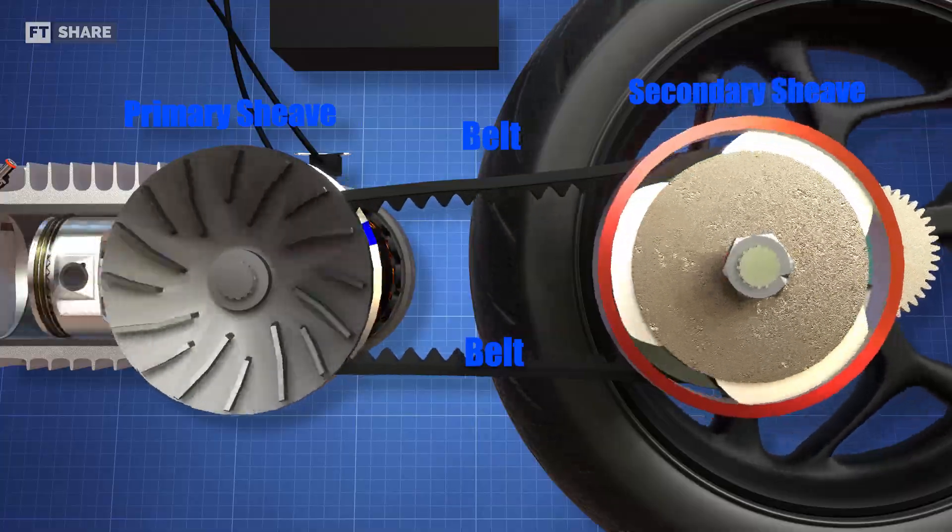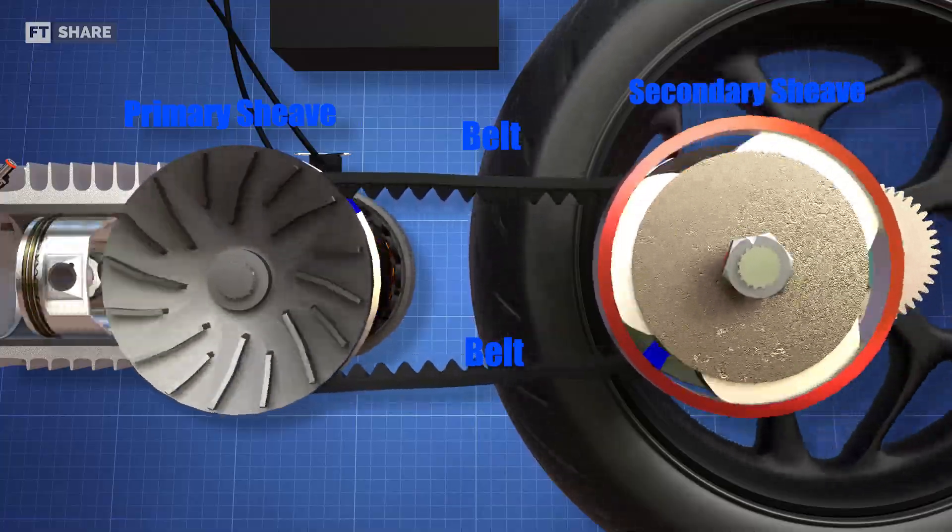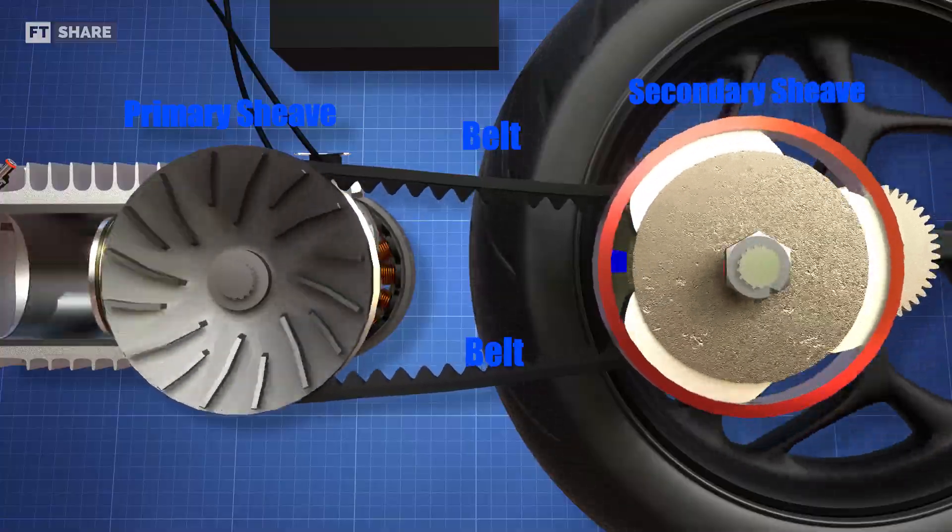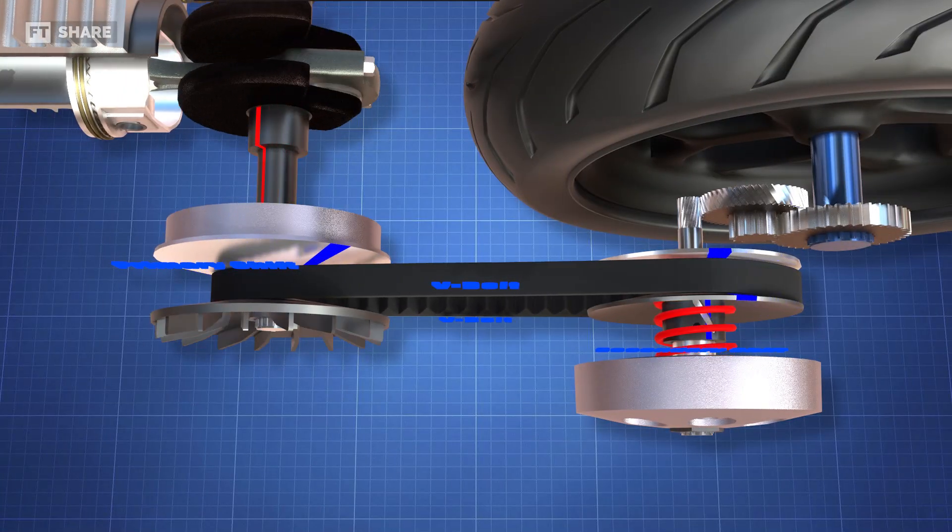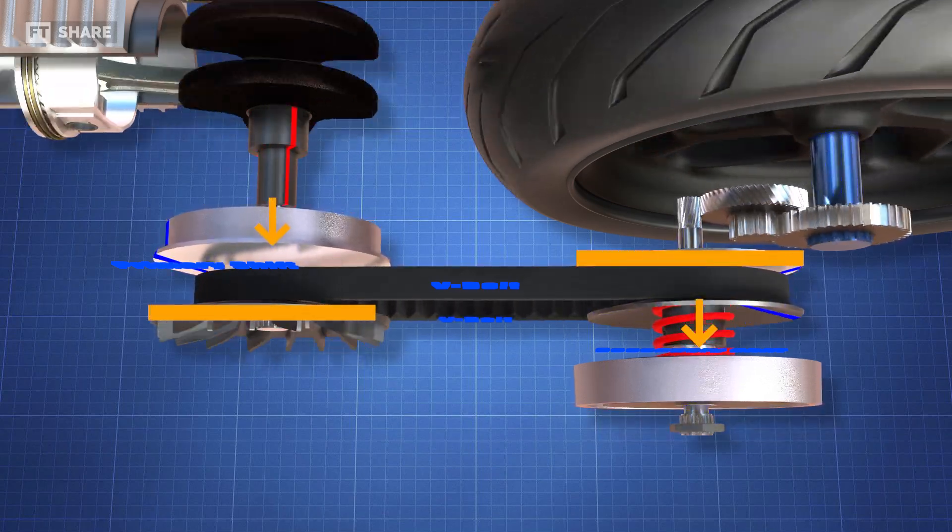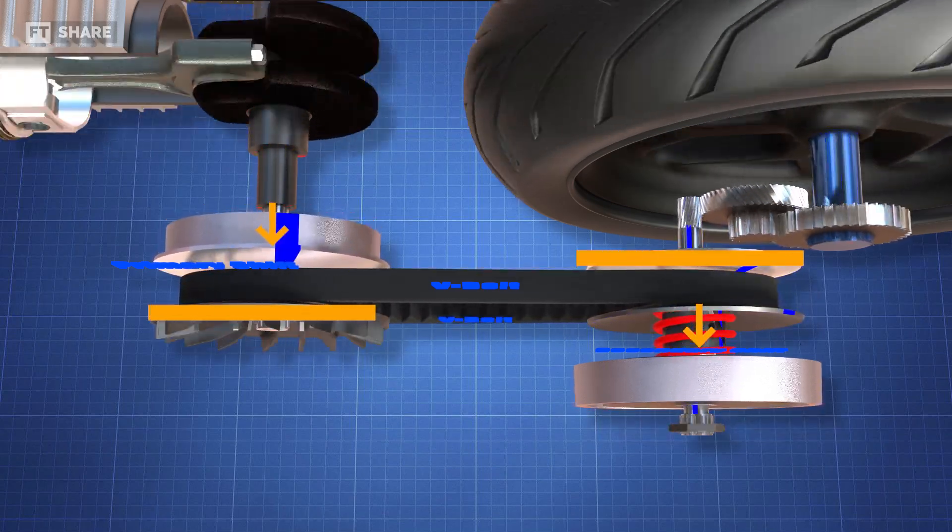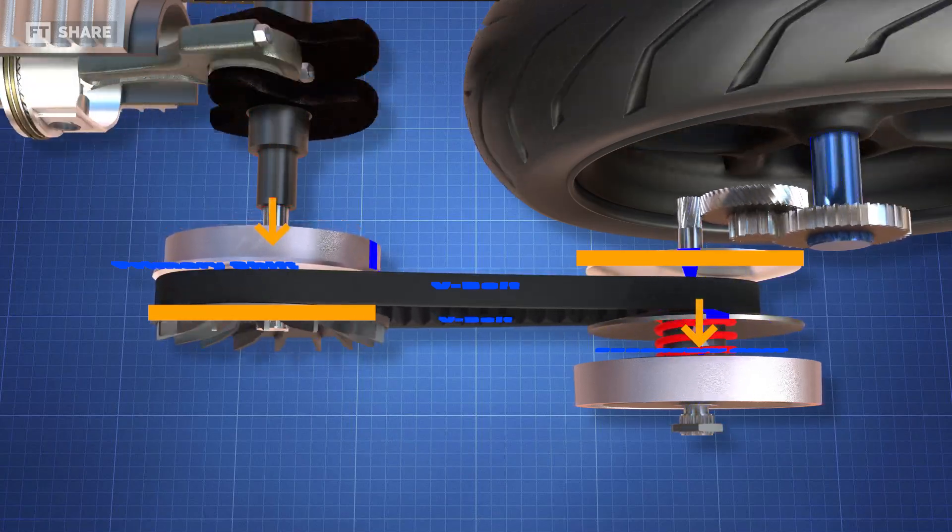To make it easier to understand, let's look at the diameter changes in slow motion with sample sheave conditions that result in low torque and high speed. As we can see in the demonstration, the centrifugal force causes the primary pulley to move, gradually overcoming the force generated by the spring on the secondary pulley.